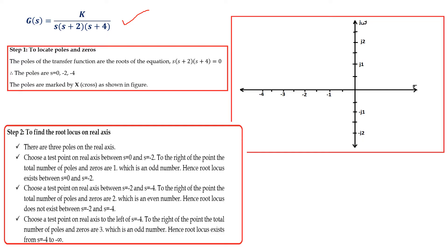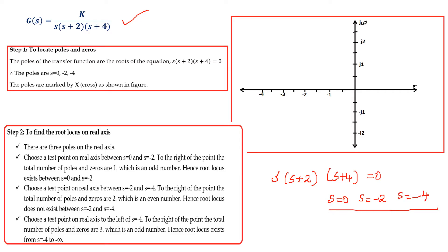The given transfer function is K divided by s(s+2)(s+4). First, we have to locate the poles and zeros. To find the poles, take the denominator s(s+2)(s+4) = 0. From this, s = 0, s = -2, and s = -4. These are the poles of the equation. Poles are marked by a cross as shown in the figure.